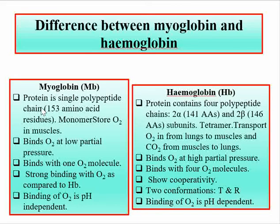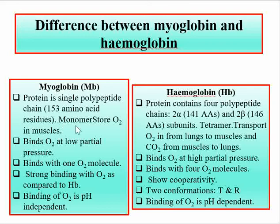If we look at the difference in their structural units, we find that the heme is the same part of both myoglobin and hemoglobin, but the protein part is different. The protein of myoglobin is a single polypeptide chain containing 153 amino acid residues, and it is a monomeric form.